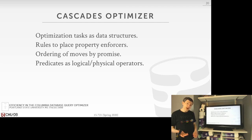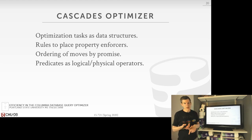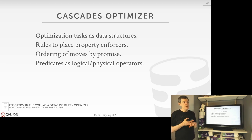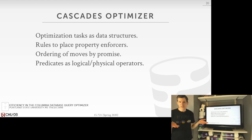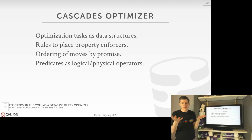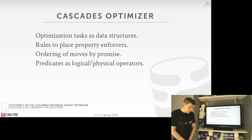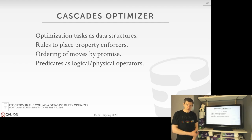Fourth, Cascades treats predicates as first-class entities in the system, allowing transformations on them just as we would for operators. This is how we're able to do predicate pushdown and projection pushdown — even though predicates are in the where clause and would normally be baked inside a scan operator, the engine can do transformations on them. We're actually building this now in our own system — a student in 721 last year built an expression rewriter using our Cascades engine, and is now porting it into the new system.